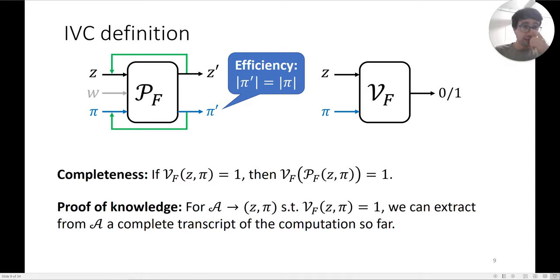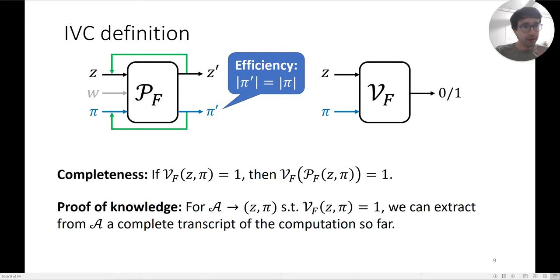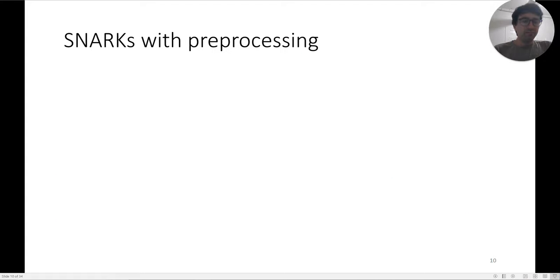The final property that makes IVC interesting, compared to ordinary arguments, is efficiency: the size of the proof π' must be the same as the size of the proof π. When you apply a single step of the prover, the proof does not grow in size. This also means that verification, being applied to a fixed-size object, does not grow in size either.